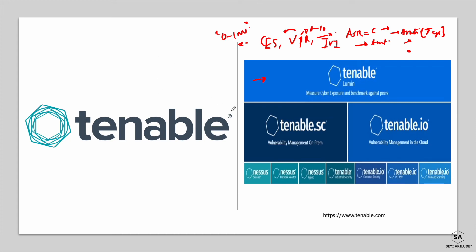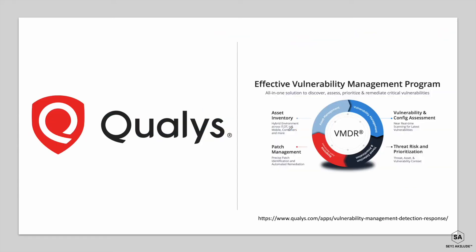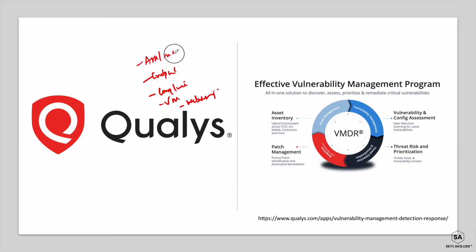For more information, you can visit tenable.com to explore all of their products in detail. Moving on to Qualys — Qualys provides different cybersecurity solutions including endpoint security, compliance, vulnerability management, web security, and asset management across numerous spaces.